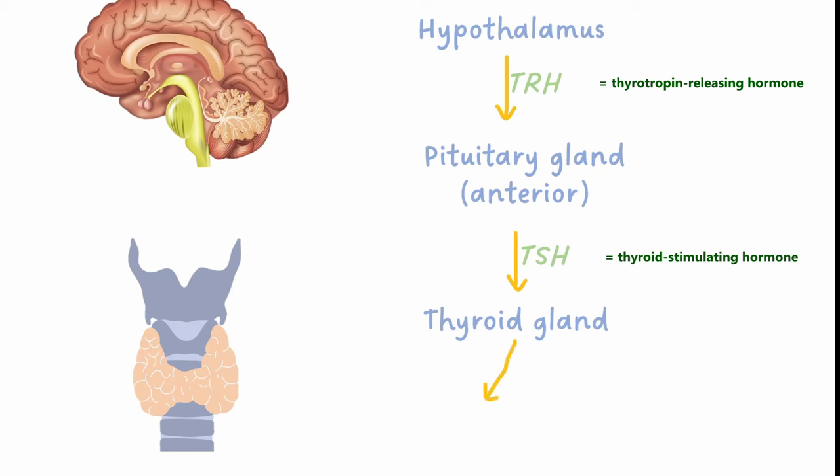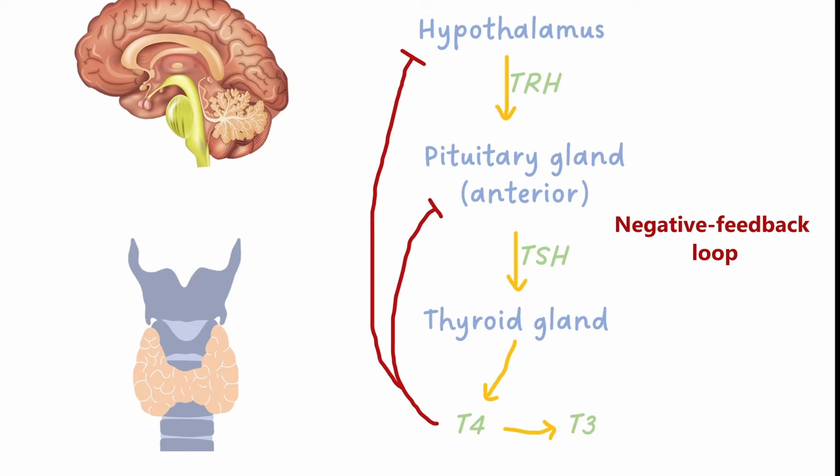TSH stimulates the thyroid to produce T4 and T3, which are the hormones that control the metabolic rate of cells all over our body. This circuit also has a negative feedback loop, which means T4 will have an inhibitory effect on the hypothalamus and pituitary gland, effectively putting on the brakes to their hormone production, and resulting in reduced T4 and T3 production.